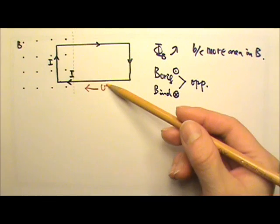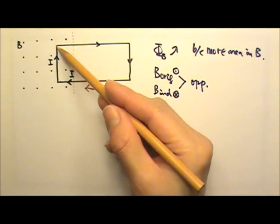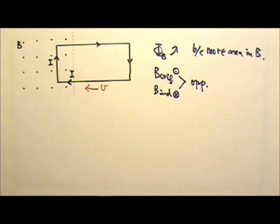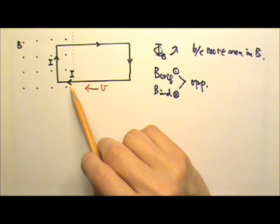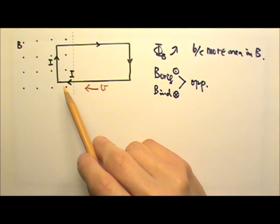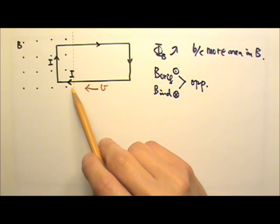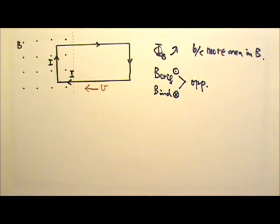So the current goes to the left, up, to the right, and down. Notice that part of the current is inside the magnetic field. Current in a magnetic field means there can be a magnetic force acting on the current. We can find the direction of the magnetic force using L cross B.